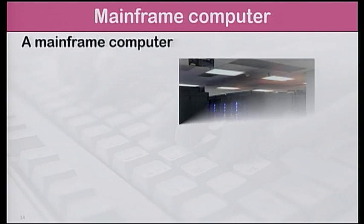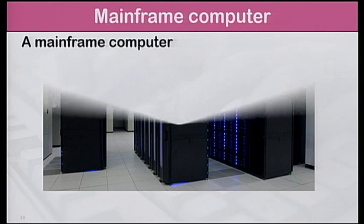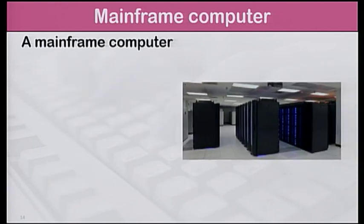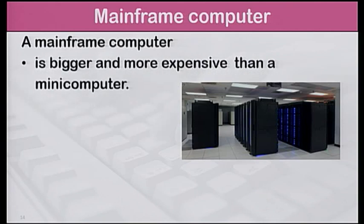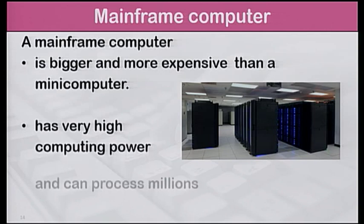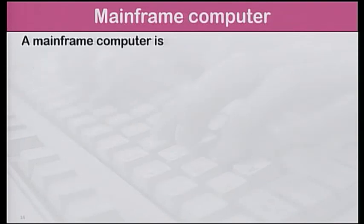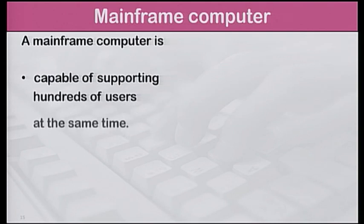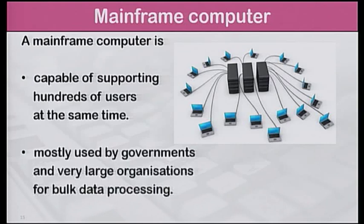The third main type of computer is the mainframe computer. It is bigger and more expensive than a mini-computer. It has very high computing power and can process millions of instructions per second. The mainframe computer is capable of supporting hundreds of users at the same time. It is mostly used by governments and very large organisations for bulk data processing.